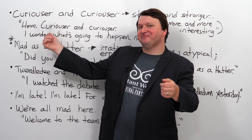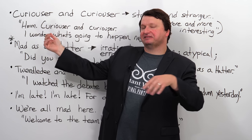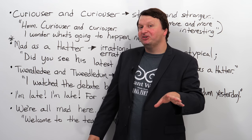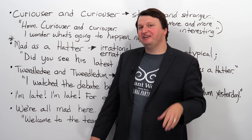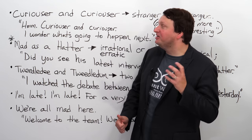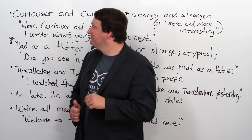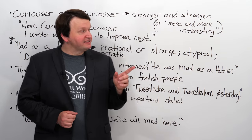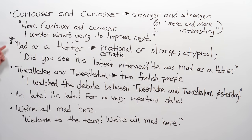Let's try that one more time — slowly, because I know it's a hard word: curiouser... curiouser and curiouser. Next, I put an asterisk next to this one — the phrase is 'mad as a hatter.'